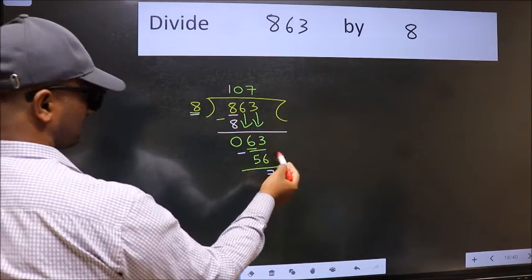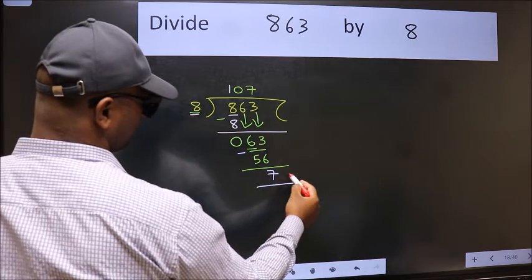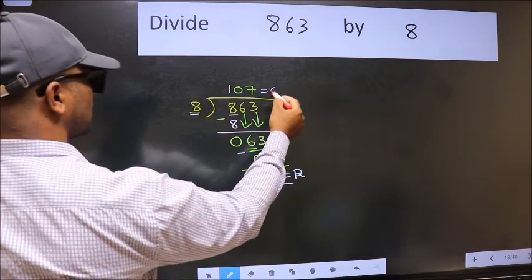No more numbers to bring it down. So we stop here. This is our remainder and this is our quotient.